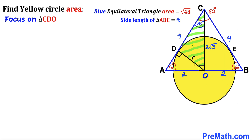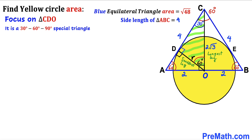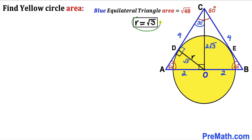Let's focus on triangle CDO. We know this angle is 90 degrees and this angle is 30 degrees, so the remaining angle must be 60 degrees, since angles in a triangle sum to 180 degrees. This is again a special 30-60-90 triangle. The longest leg OC is 2√3, so the smallest leg OD — which is our radius r — must be half of that, giving r = √3.